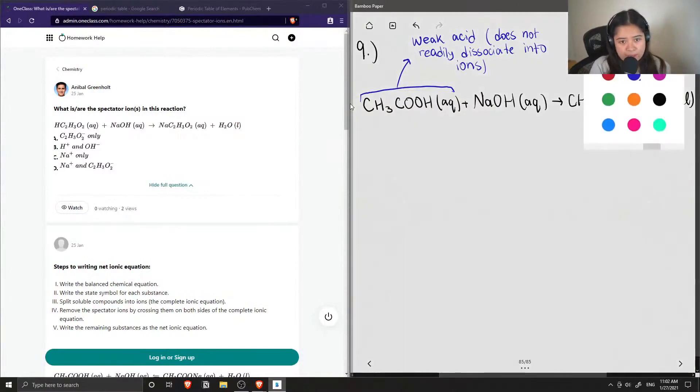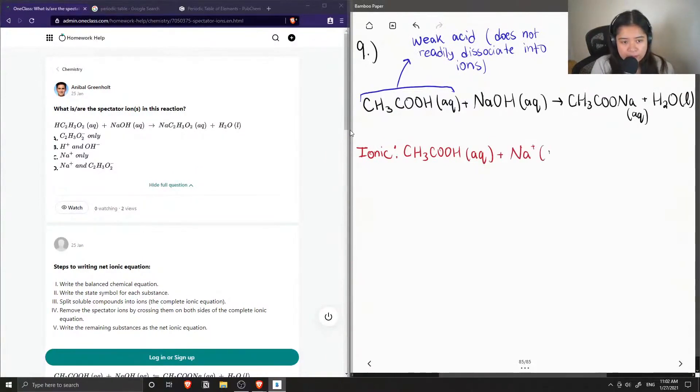So when we write out our ionic equation, our acetic acid will remain as an acid. So it's not going to separate into an acetate ion plus a proton. It's just going to remain as CH3COOH. And then the rest of our substances will separate into ions. For example, sodium plus, plus OH minus, and then we can have this produce sodium acetate, which will separate into its ions, and our water, since it's in liquid form, will also stay as is.